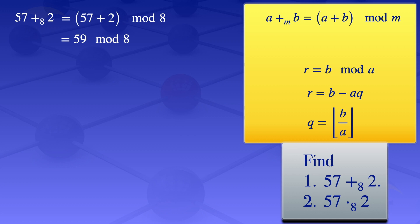In this case, our divisor is 8, so a equals 8. Our dividend is 59, so b equals 59. Using these values, our quotient will be the floor value of 59 divided by 8, which gives us 7.